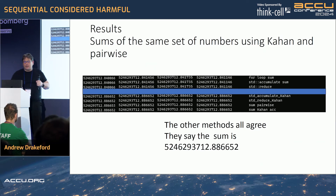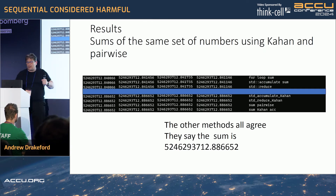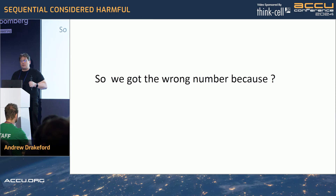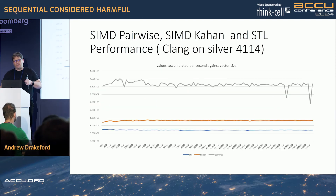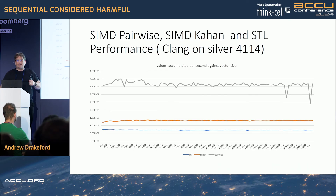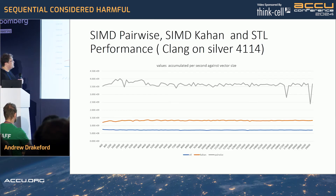Just to show it's real: if you look at the last bit on the pairwise result, it wiggles off by one bit. We got the wrong number not because associative addition is bad, but because we added them in the most inaccurate way possible. If you look at the performance — comparing SIMD, pairwise, Kahan, and STL — the silver line at the top is going six times faster than the STL version, and also giving us the correct answer.